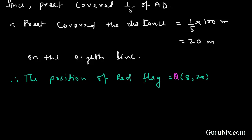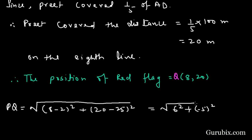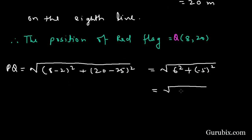Now we shall find the distance PQ by using the distance formula: √[(8-2)² + (20-25)²] = √[6² + (-5)²] = √[36 + 25] = √61 meters. So this is the distance between two flags, green and red.